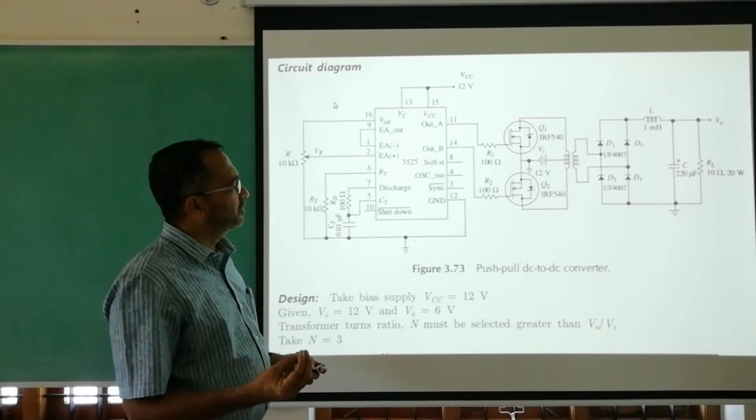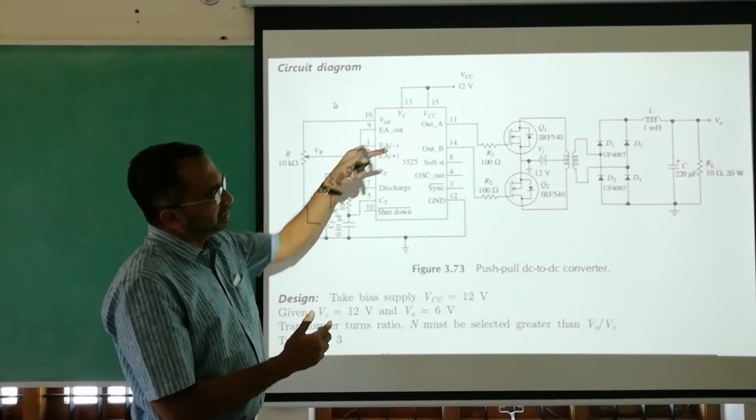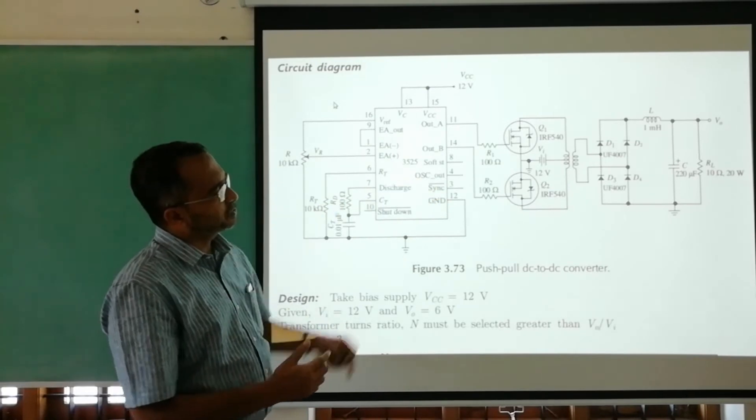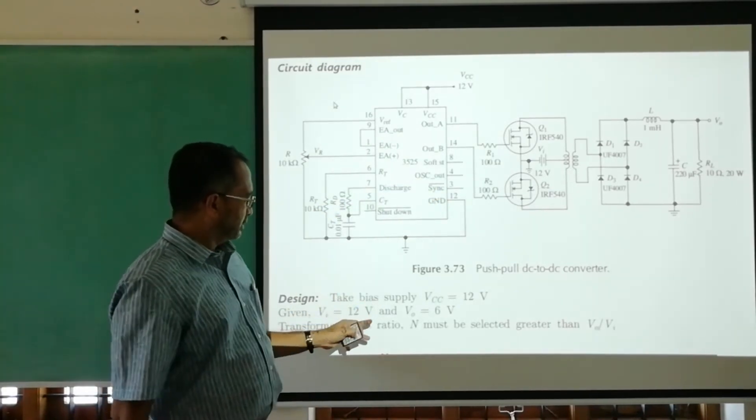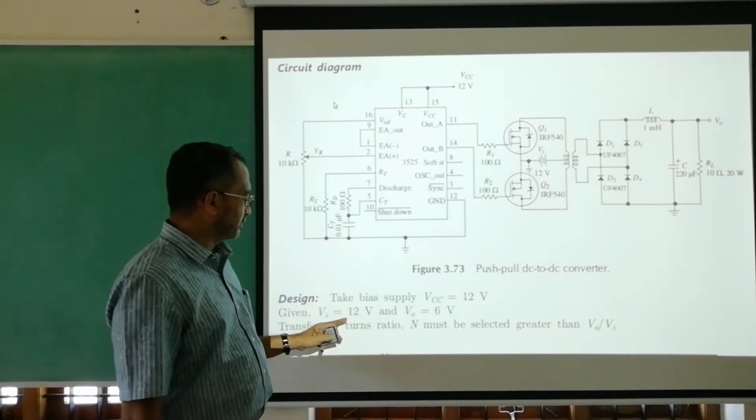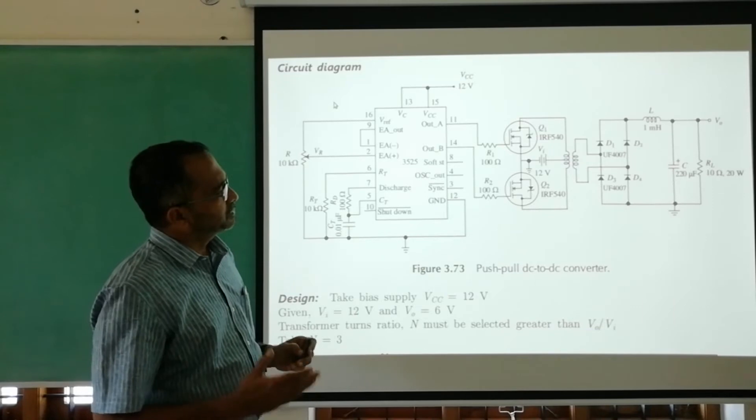For the transformer and active switching elements, we selected MOSFETs IRF540 because they're suitable to generate 6 volts from 12 volt input.